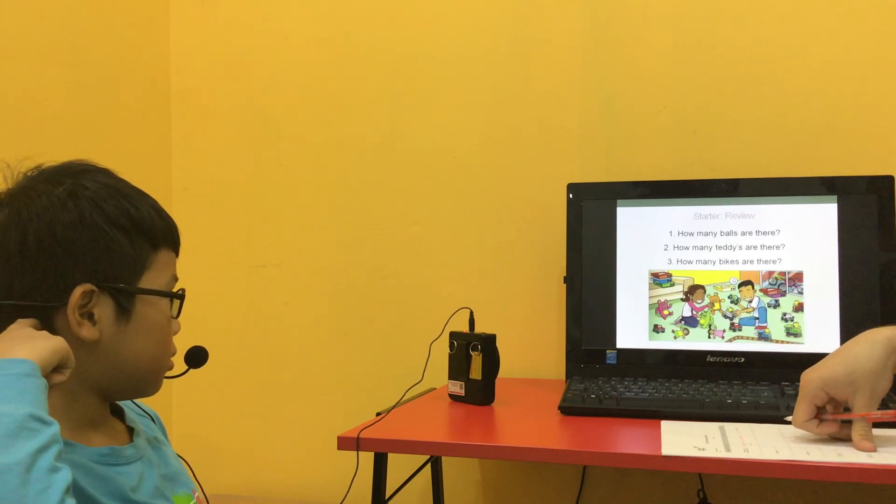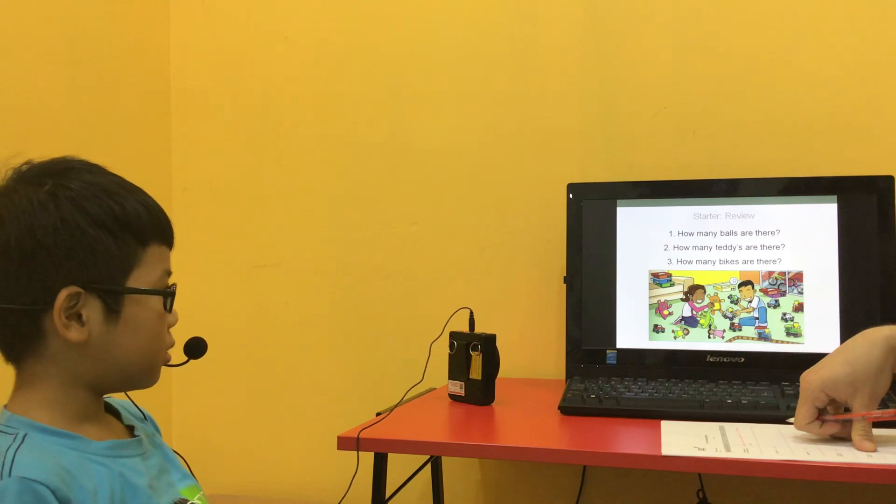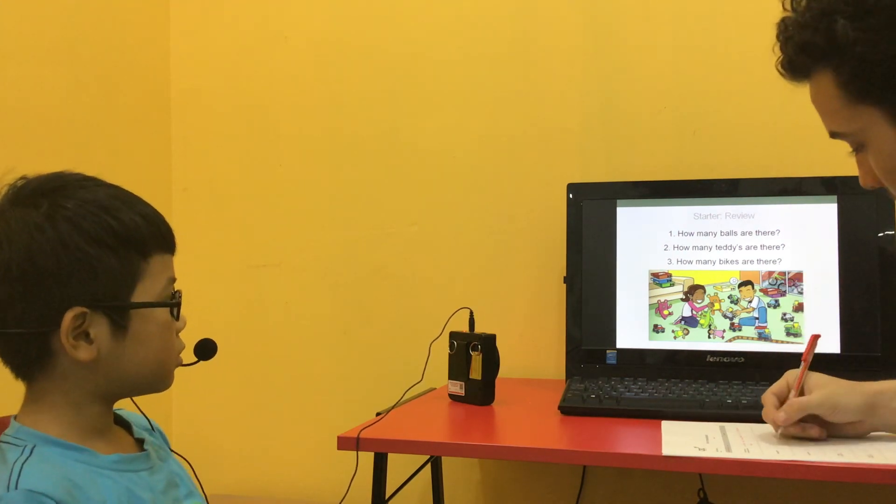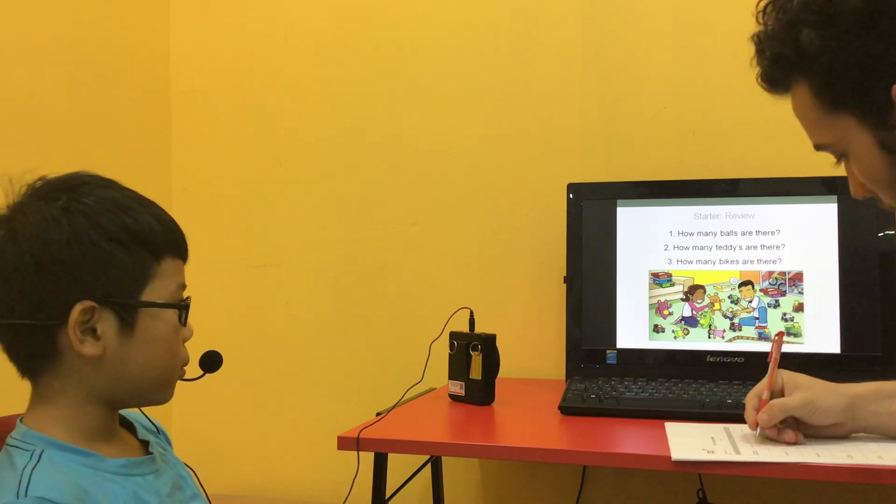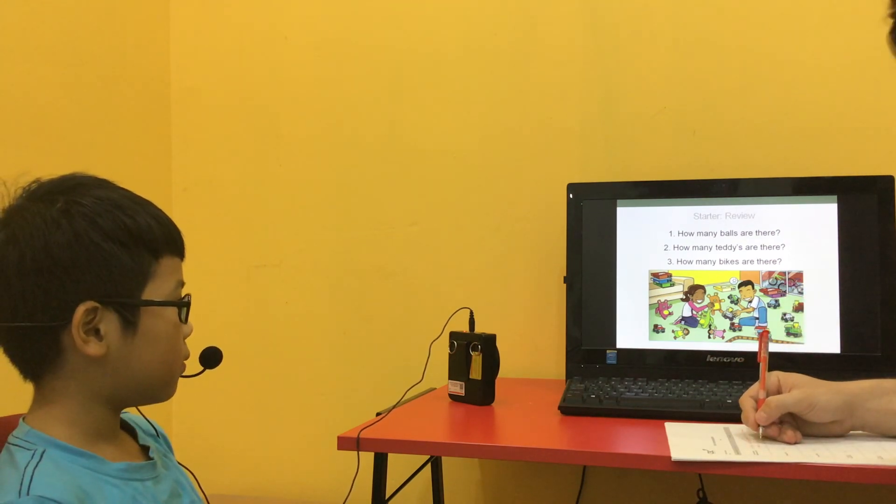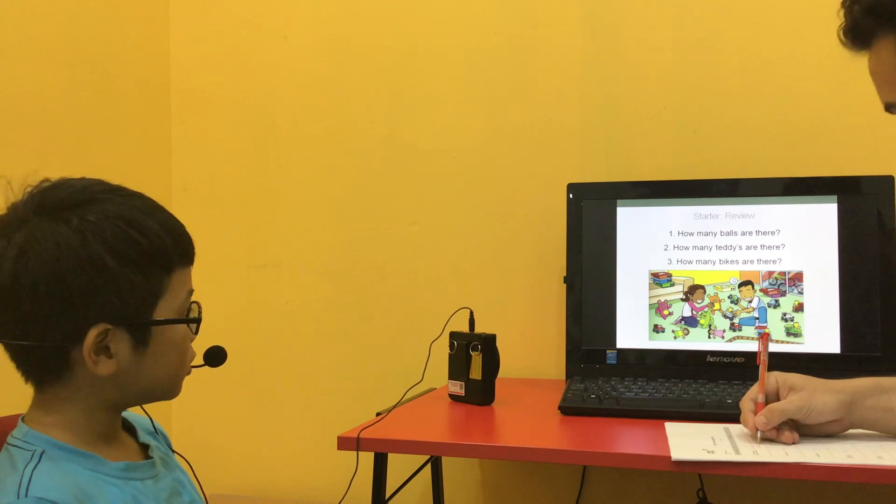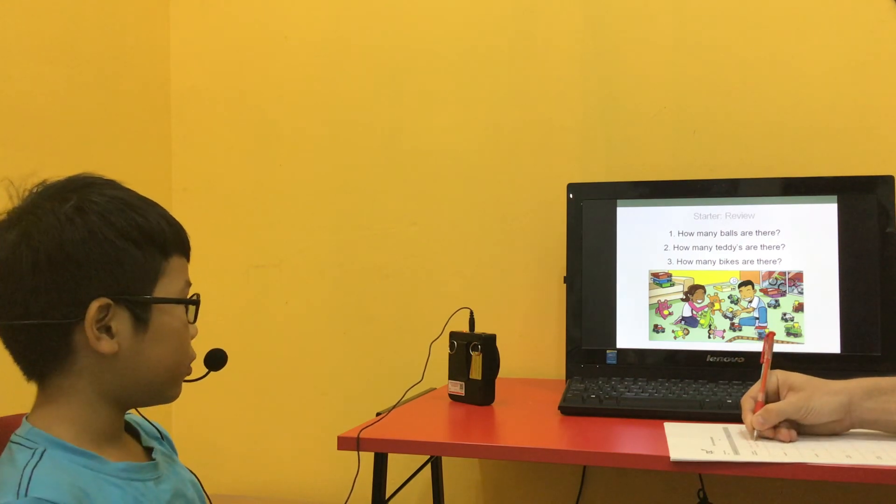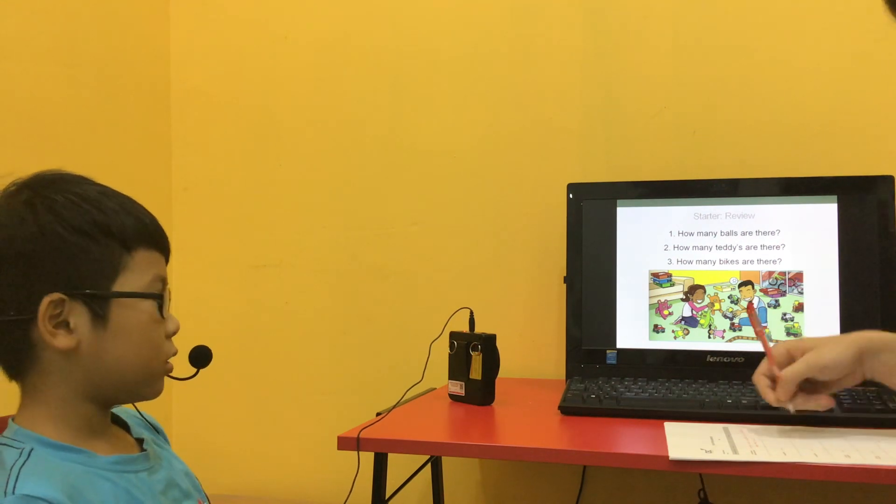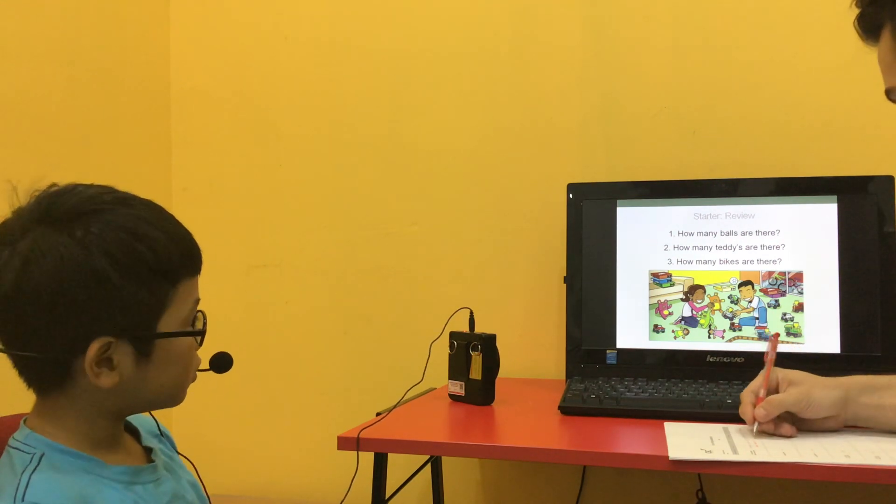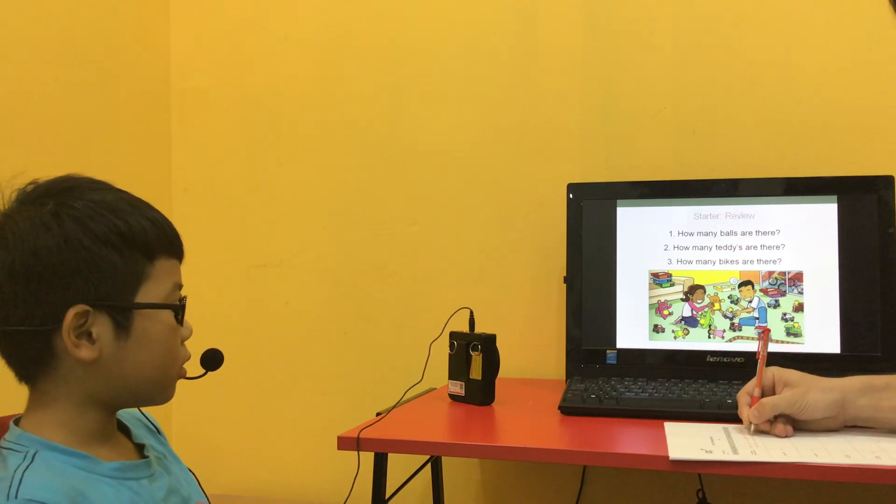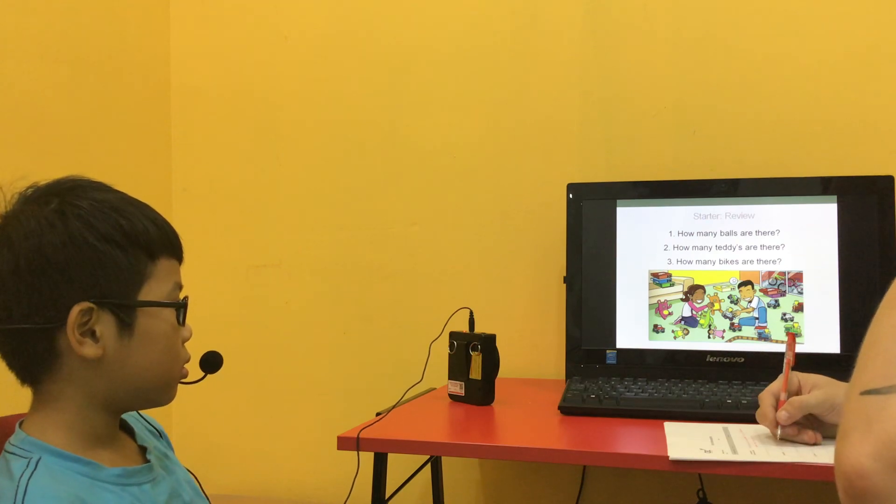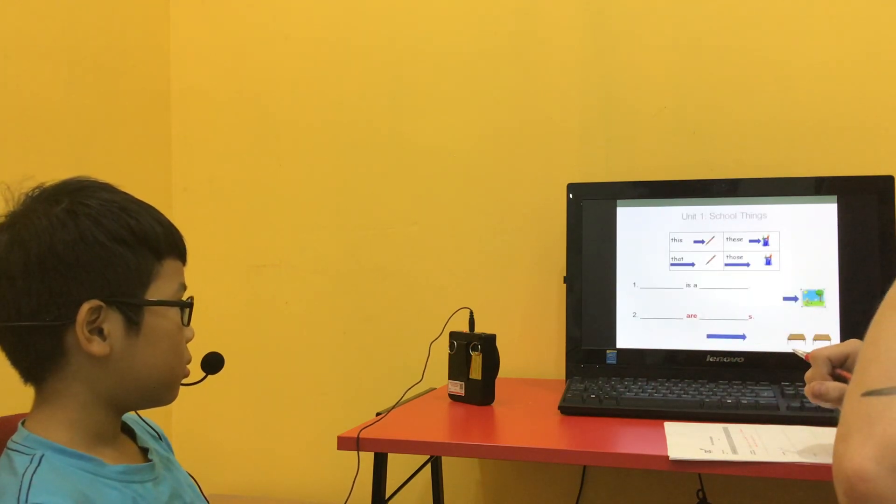I suppose you answered number five already. How many balls are there? Do you have to use there is or there are? There is one ball. Okay. And how many teddies are there? There are three teddies. How many bikes are there? There are two bikes. And okay, very good. There are two bikes.